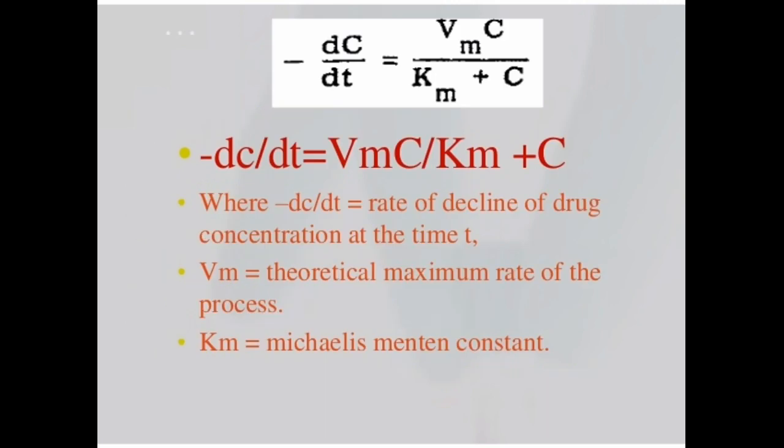Non-linear pharmacokinetics can be expressed by a formula: minus dC by dT is equal to Vm times C by Km plus C. Minus dC by dT is the rate of decline of drug concentration at given time T. Vm stands for theoretical maximum rate of rate process and Km stands for Michaelis-Menten constant. So this is the formula which helps us in understanding non-linear pharmacokinetics.